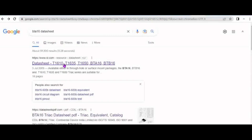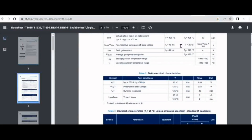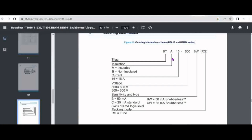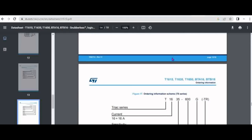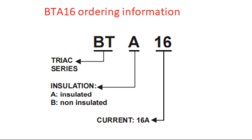Let us search for the BTA16 datasheet on the internet, then download and study it carefully, noting the BTA16 pinout and power ratings. The BTA16 pinout is as follows: pin 1 is main terminal 1 (T1), pin 2 is main terminal 2 (T2), pin 3 is the gate (G), and pin 4 should not be connected. Regarding ordering information: BT stands for TRIAC series, the letter A stands for insulation and can be substituted with letter B which means non-insulated, and 16 stands for 16 amperes.